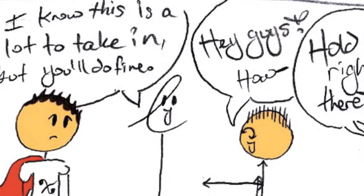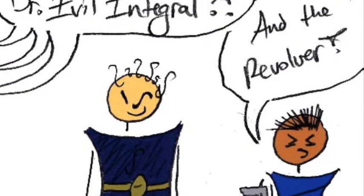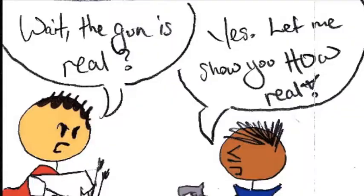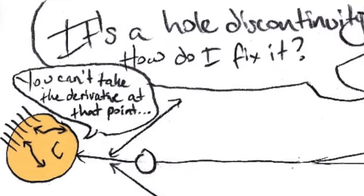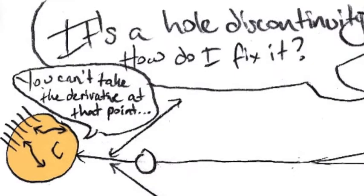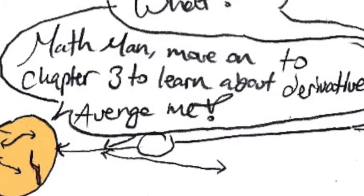Hey guys, ha- Hold it right there! Dr. Evil Integral? And the revolver. Wait, the gun is real? Yes, let me show you how real. Ow! Lineman! I've been hit! It's a hole discontinuity. How do I fix it? You can't take the derivative at that point. What? Math man, move on to chapter 3 and learn about derivatives. Avenge me!